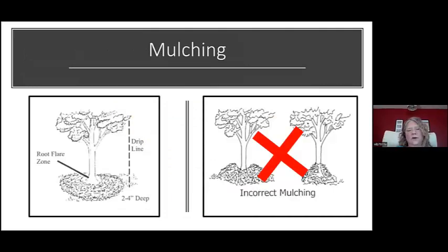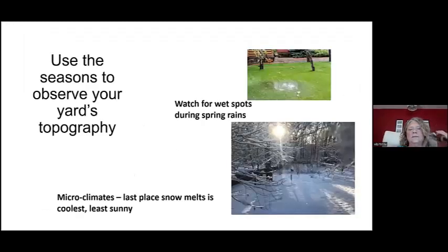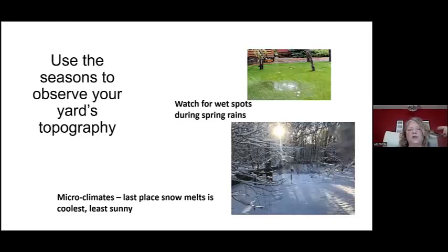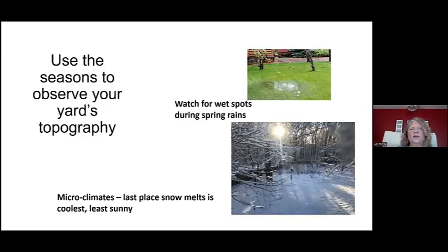Proper pruning cuts protect the branch collar — that's where the cut should be made. Protecting that area will help the tree cordon off the zone so it doesn't decay. For mulching, keep that root flare zone free of mulch and mulch to the drip line if you can — that's the ultimate goal. For site development, use the seasons to observe your plant's topography. When you get a big rainfall, do a walk around with boots on and look for wet spots. In the winter, look for spots where snow melts last to observe microclimates or changes in topography — get to know what your site looks like.